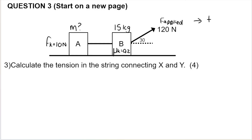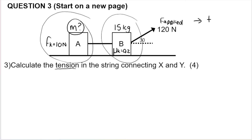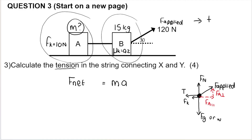The next question asks us to calculate the tension in the string connecting the blocks. We have two options: use block A or use block B. Using block A won't work because I'm looking for tension but also don't know the mass of block A — that gives two unknowns. So I'm going to use block B to find the tension.